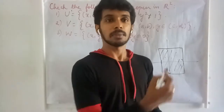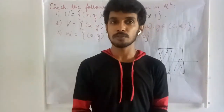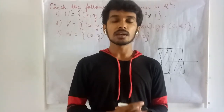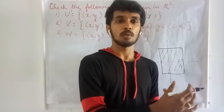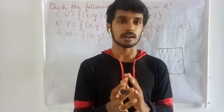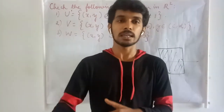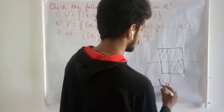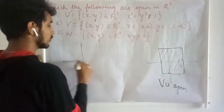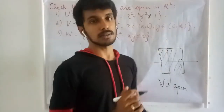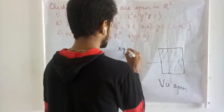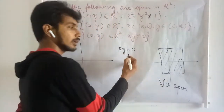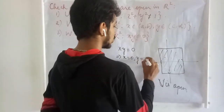Therefore we can conclude that V is open. I am not writing the formal proof — from the diagram we can understand. If asked to write a formal proof for MCQ questions, you must understand the conditions for an interior point; writing it formally is easy once you understand. So V is open. In the third case, we are given the collection of points in R² such that xy ≠ 0. We need to identify when xy = 0 and omit those points.